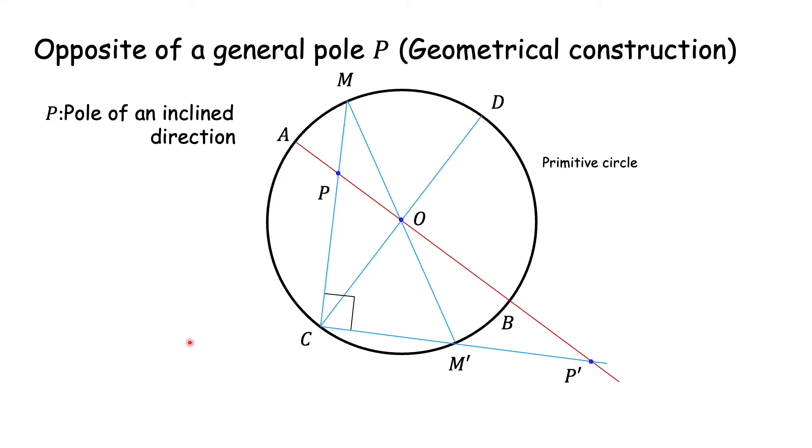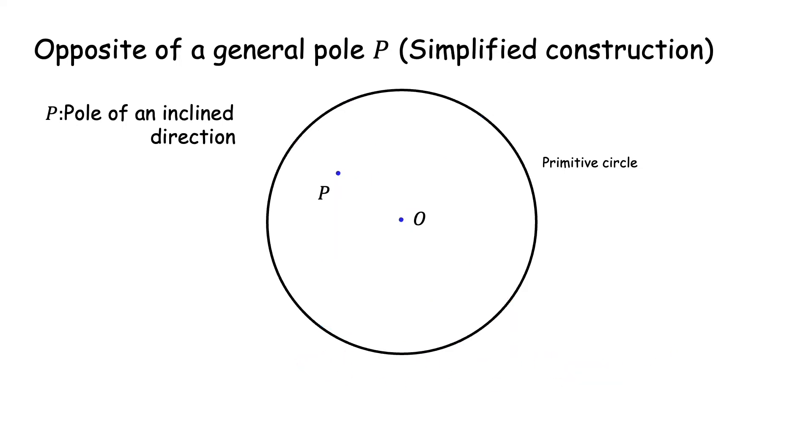We do not really need to construct this diameter MM'. Once we have found the direction CP, we just go perpendicular to that to find P' as intersection of AB and CP'. We show this simplified construction here. We construct the first diameter AB and then the orthogonal diameter CD. We join CP and then we draw perpendicular to CP to meet the diameter AB at P'. P' is the opposite pole of P.